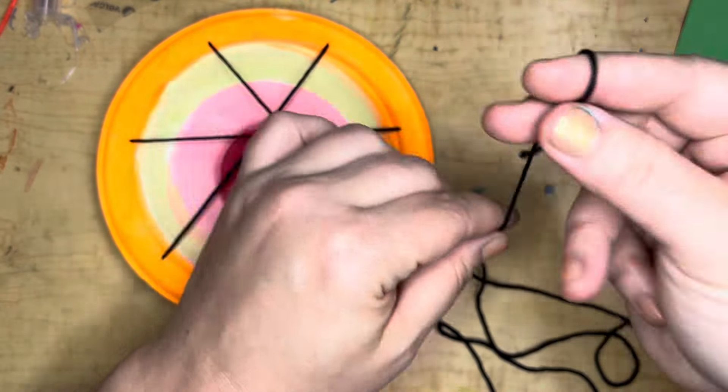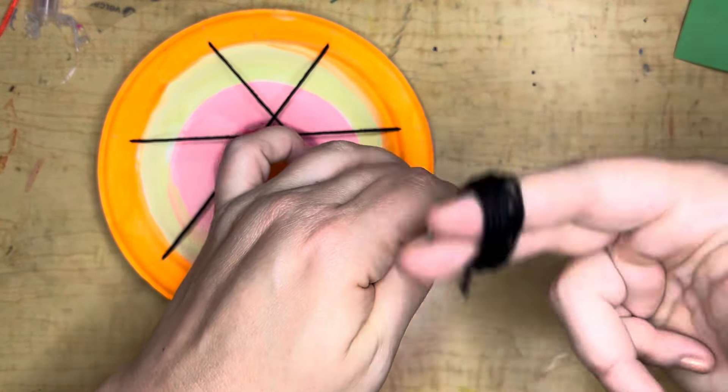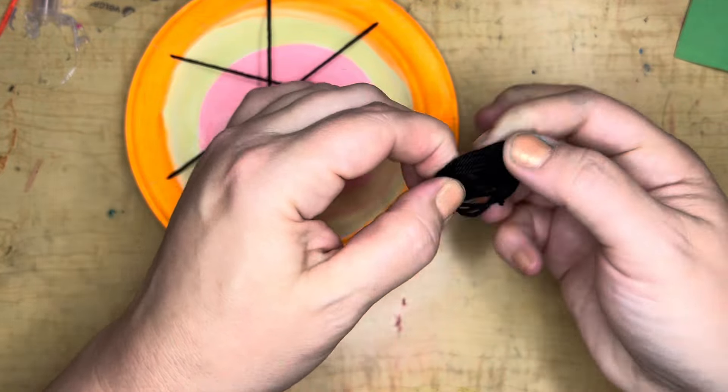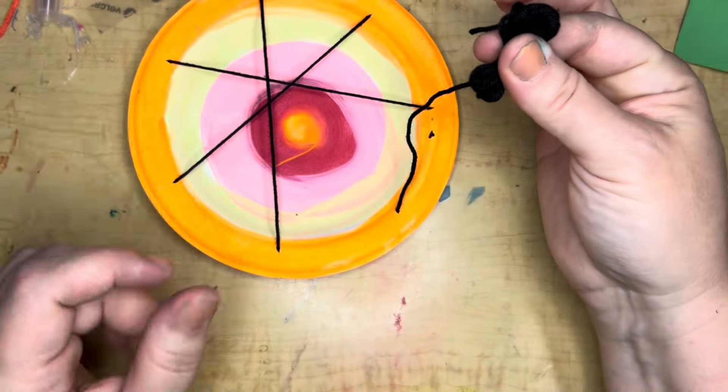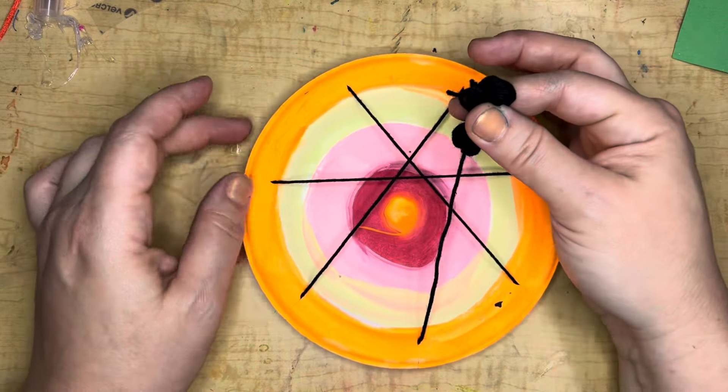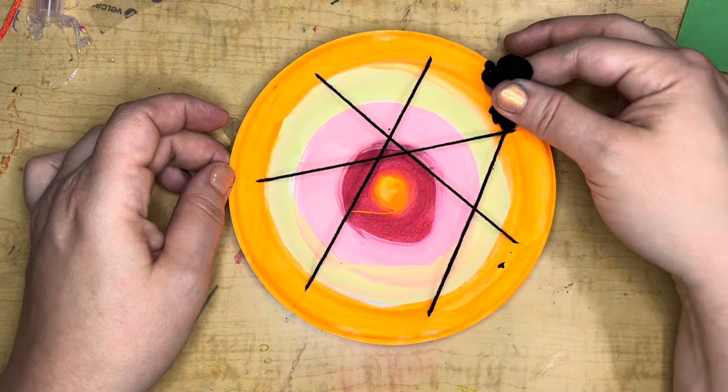I'm going to make a little wad of yarn by wrapping the extra around my fingers because it's time to start weaving. When we weave, you want a little packet of yarn like this that's easy to hold. You're going to decide which direction you want to go.